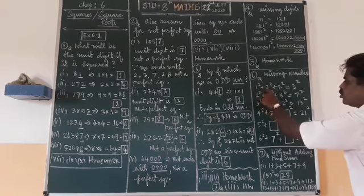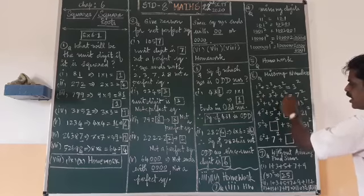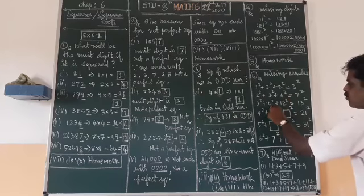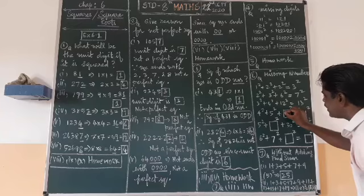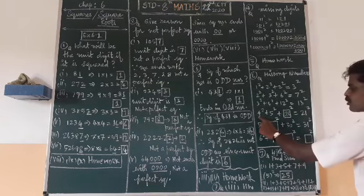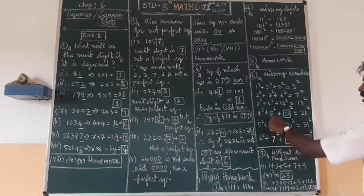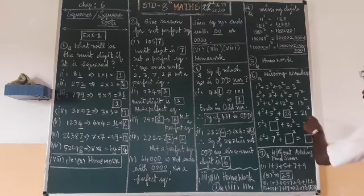Looking at the pattern: the product terms are 1 into 2 gives 2, then 2 into 3 gives 6, then 3 into 4 gives 12. So the next is 4 into 5 gives 20. So the missing square is 20 squared, and the right-hand side would be 21 squared. Verify: 4 squared is 16, 5 squared is 25, sum is 41. 20 squared is 400. 400 plus 41 equals 441, and 21 squared is also 441. Confirmed.